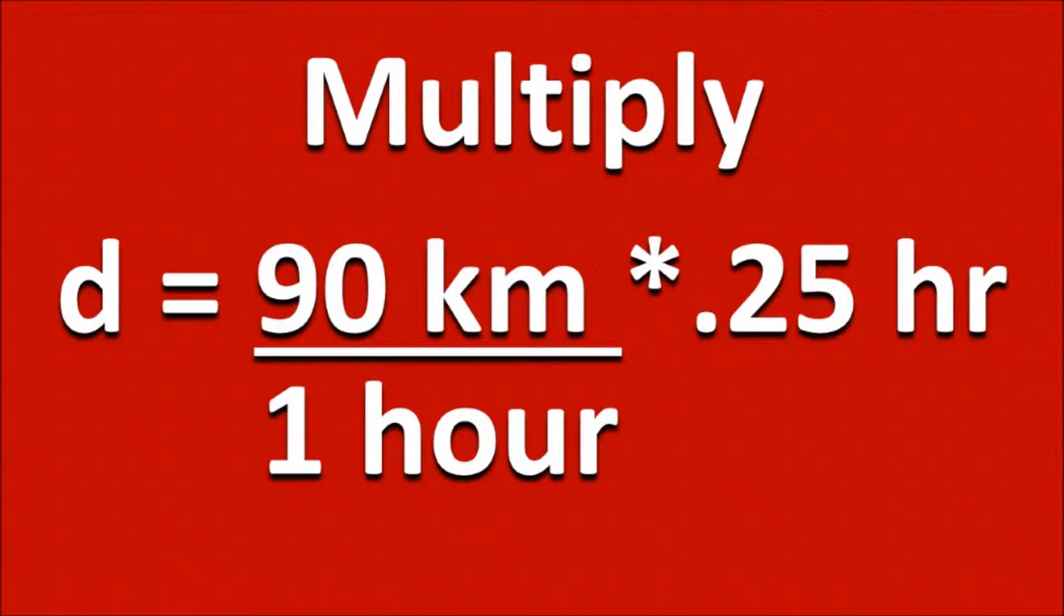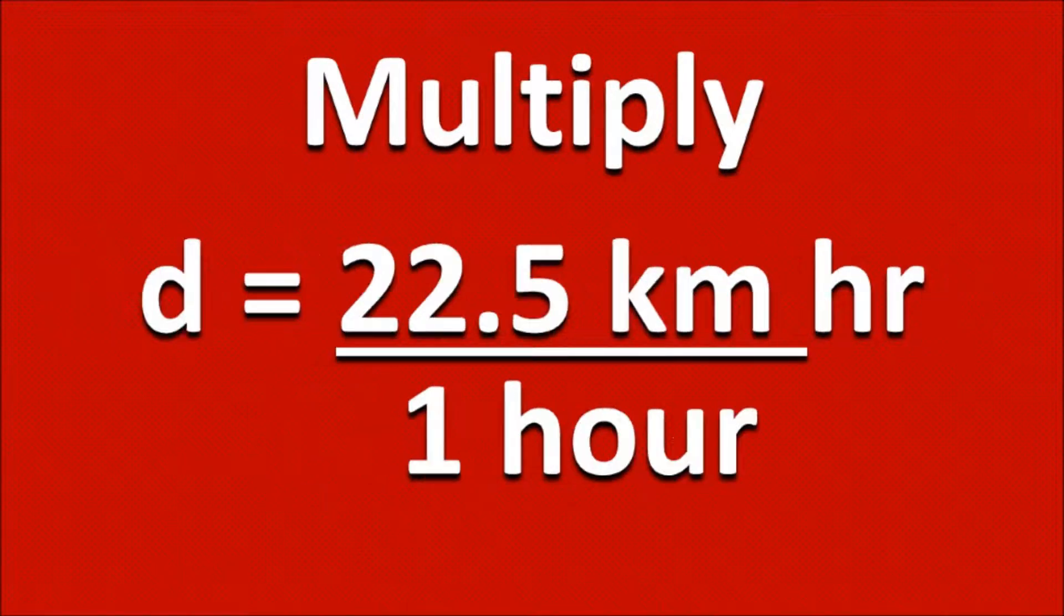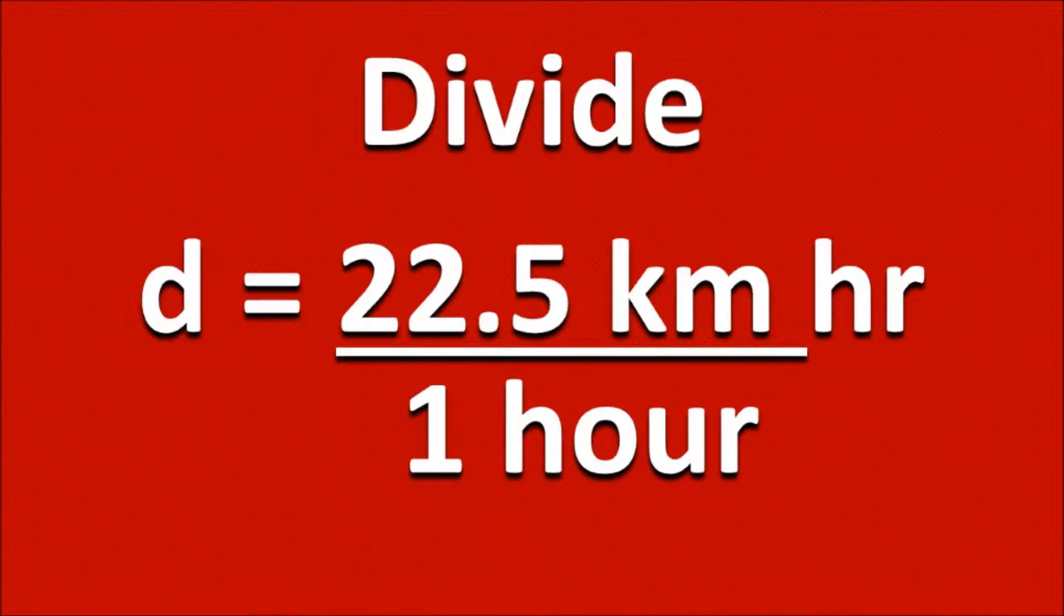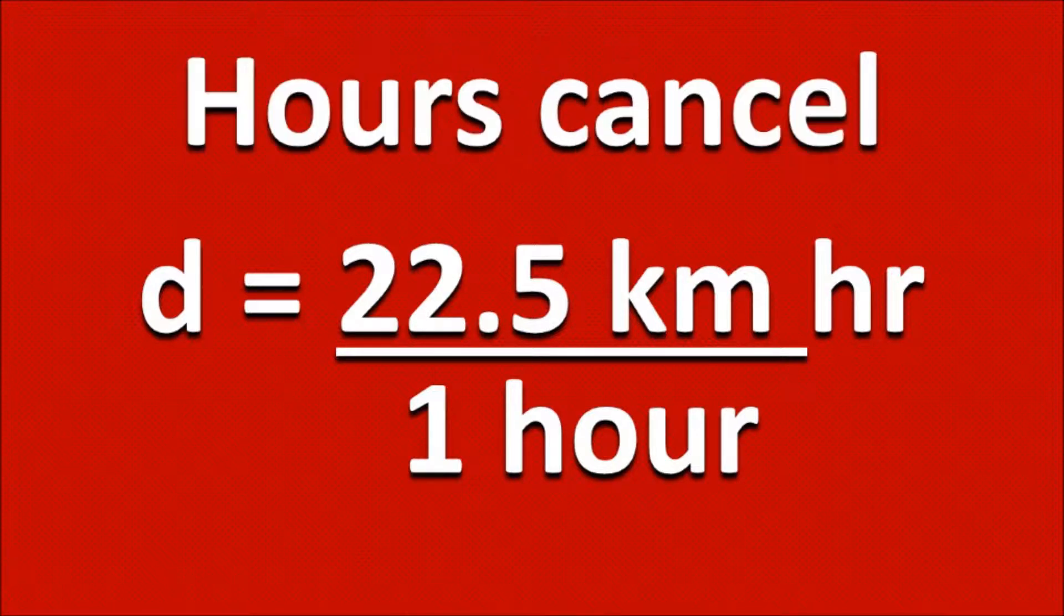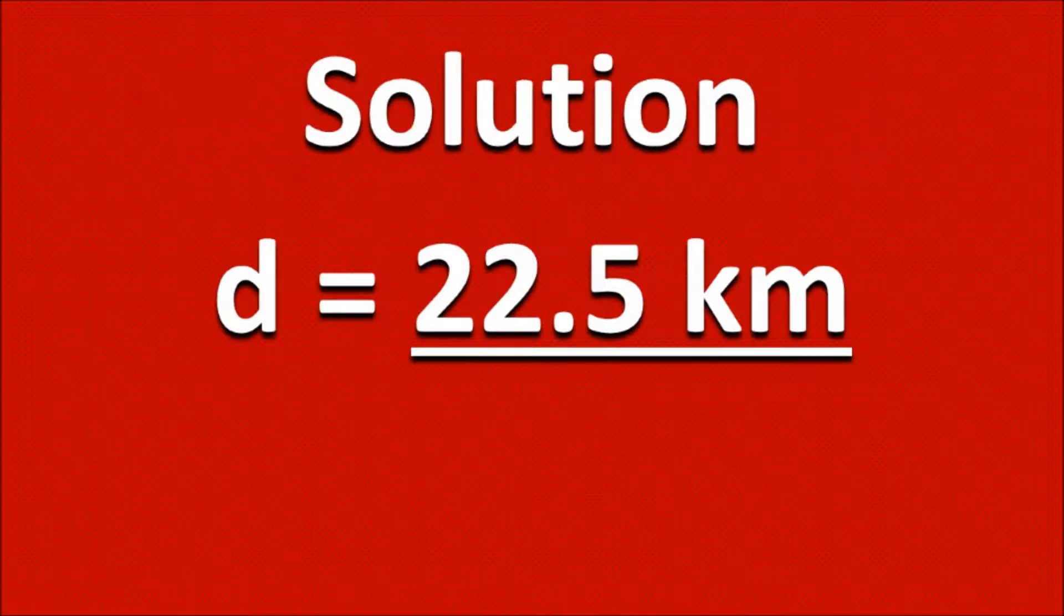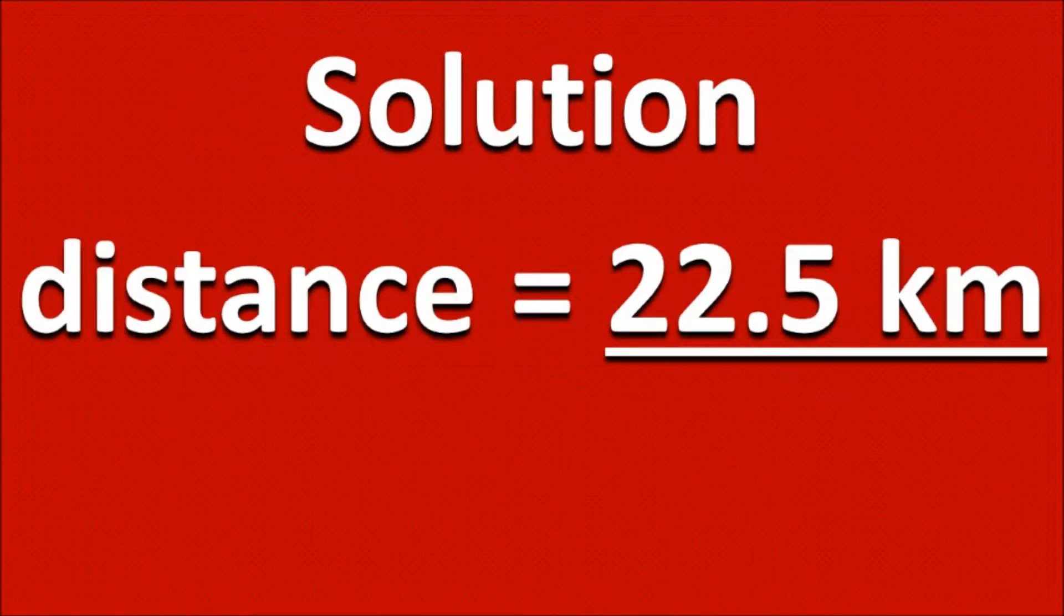Now let's multiply. So here we have 22.5 kilometers times hours divided by one hour. Let's divide and cancel out these hours. So here's our solution: 22.5 kilometers is the distance that we traveled.